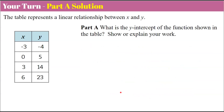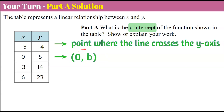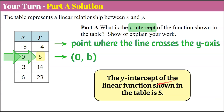Welcome back. Let's review the Part A solution. We have the table that represents a linear relationship between X and Y, and Part A asks us to identify the Y-intercept. The Y-intercept is where the line crosses the Y-axis — the ordered pair when X is 0, and the Y-coordinate is B. Looking at our table, when X is 0, Y is 5. So the Y-intercept of the linear function shown in the table is 5.